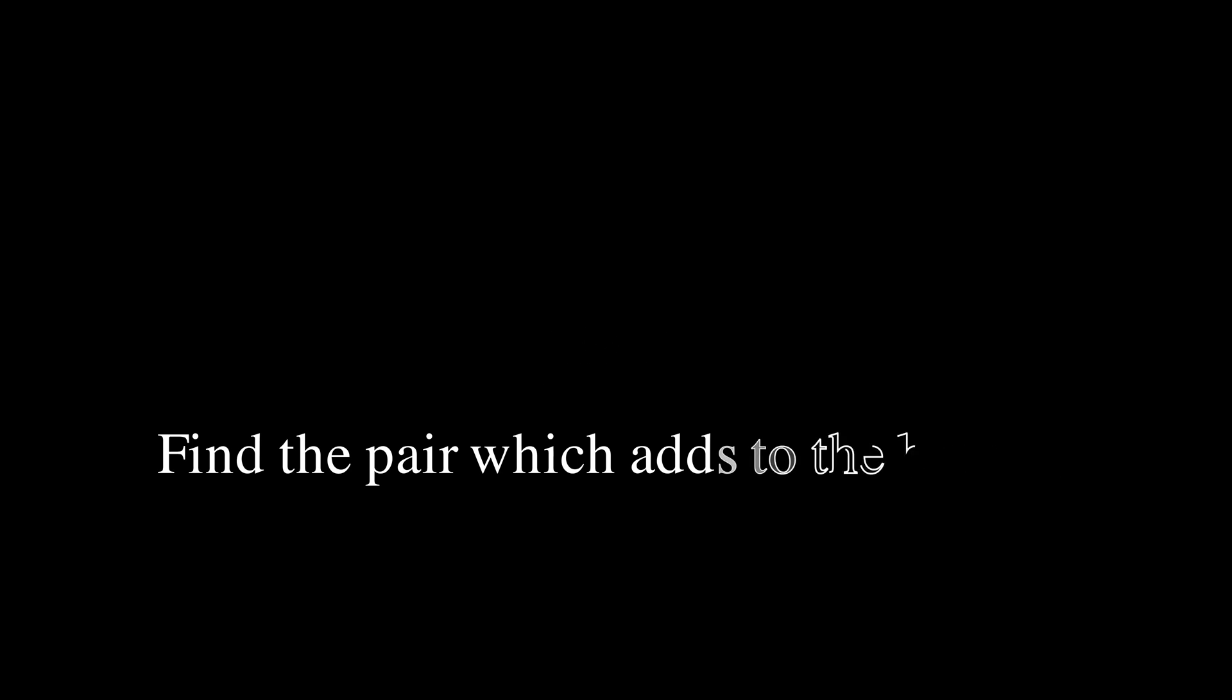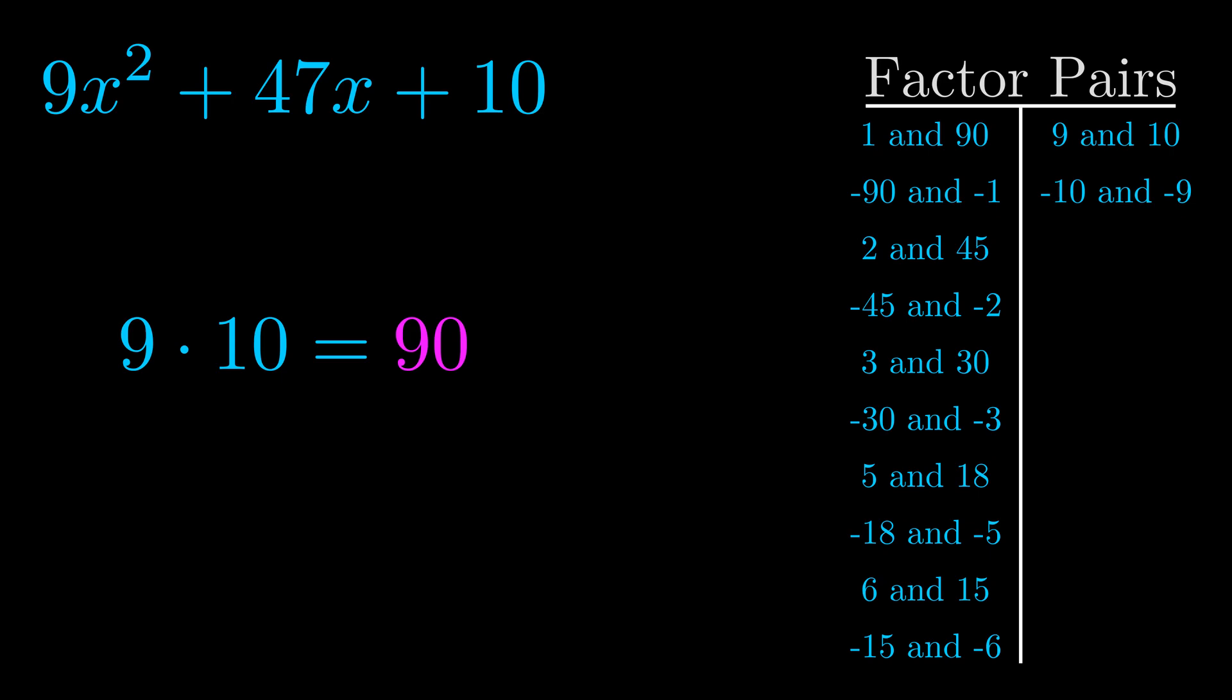The b value is the coefficient on the x term. That's the middle term, the one that we haven't done anything with yet. And really this is the only factor pair that we need.